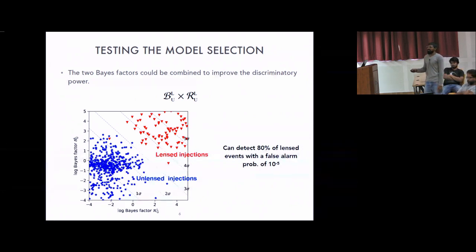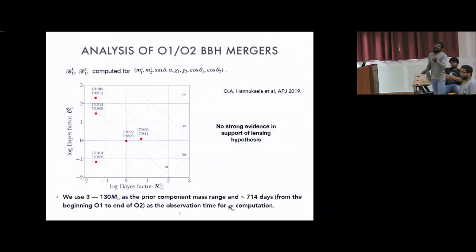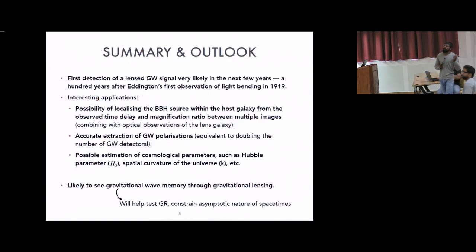You can translate this to efficiency and false alarm probability. For example, if you have correctly identified 10 to the power 5 strong lensed events, then you will falsely attribute one lensed event as an unlensed one, but that's a very minimal thing. At that level of ignorance, our method has 80 percent efficiency. Then we just apply the same thing on real data that LIGO has detected in O1 and O2 observation runs. We see even at 3-sigma level, there is no point here. So there is no strong evidence for lensing in our data.